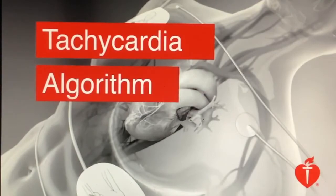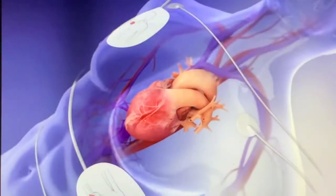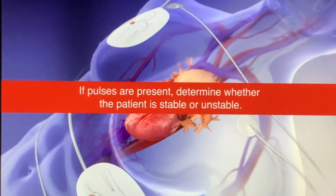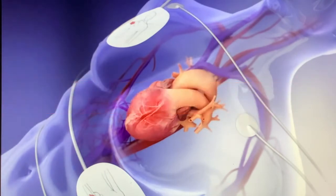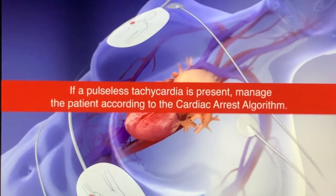The tachycardia algorithm simplifies initial management of tachycardia. The presence or absence of pulses is considered key to management of a patient with any tachycardia. If pulses are present, determine whether the patient is stable or unstable, and then provide treatment based on the patient's condition and rhythm. If a pulseless tachycardia is present, manage the patient according to the cardiac arrest algorithm.